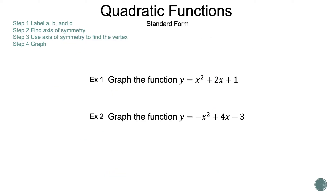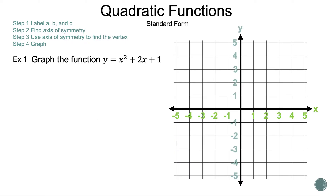Now let's put all this into action by taking a look at the examples we're going to discuss in today's video. Let's take a closer look at example 1. Now let's read the steps. Step 1: label a, b, and c. Step 2: find axis of symmetry. Step 3: use axis of symmetry to find the vertex. Step 4: graph. Now let's read the question: Graph the function y is equal to x squared plus 2x plus 1.